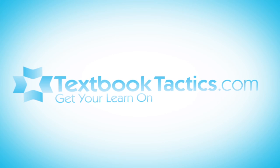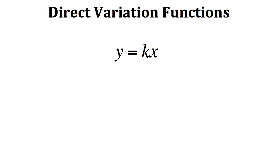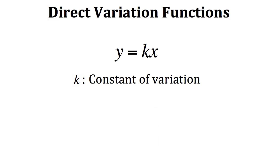For this tutorial we're going to learn about direct variation functions. A direct variation function is a specific type of linear function and it's expressed in the form y equals kx. You can interpret this as saying that y varies directly with x — in other words, the output varies directly with the input. Similar to how a linear function has a slope attached to the x term, direct variation functions have a constant of variation attached to it.